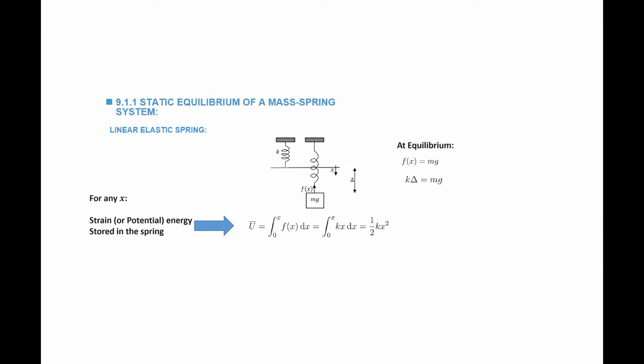We are now going to define two quantities. The first quantity we're going to call the strain or potential energy stored in the spring. This is equal to the integration of the force in the spring over the extension dx from 0 to x, so this internal energy is equal to half kx squared.